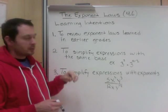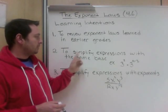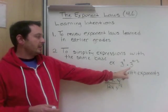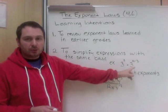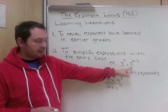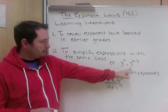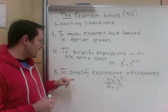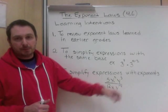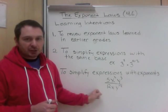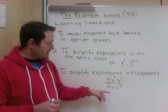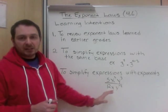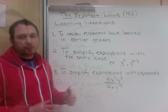So we need to review those exponent laws. Next, we need to be able to simplify expressions with the same base. So when you have 3 squared times 3 to the power of x minus 2, they both have a base of 3 — a base and an exponent. When the bases are the same, you can start to simplify them. Last, we're going to simplify expressions with exponents. Here's an algebraic expression: 5x squared y cubed divided by 12xy to the negative 4. There are things they share in common, so we can simplify it down using our exponent laws.